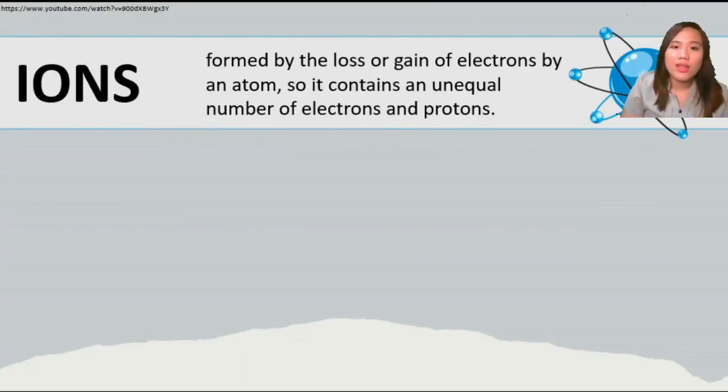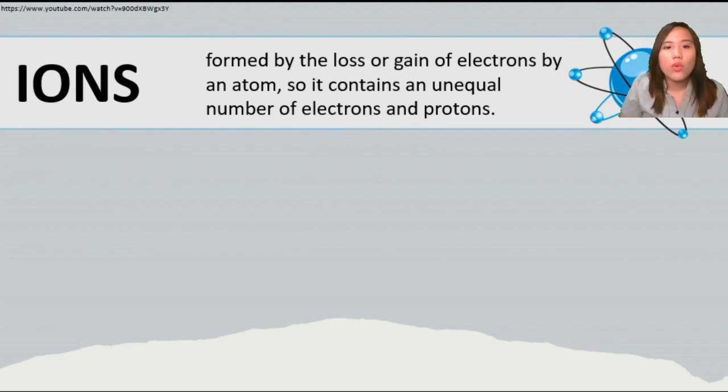An ion is formed by the loss or gain of electrons by an atom, so it contains an unequal number of electrons and protons. Earlier I told you that electrons should always equal protons. However, since protons are constant, the only one that can be lost or gained is electrons. When it happens and the atom has a charge, we call it ions. There are two types of ions.